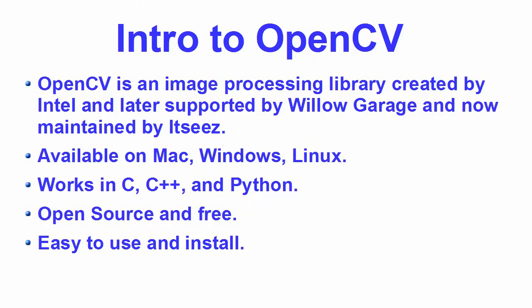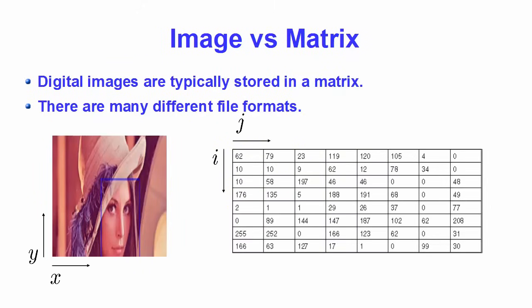Because OpenCV primarily deals with computer vision, that means dealing mainly with images or videos. Digital images are typically stored in the form of a matrix. If you have heard about PPI, or pixels per inch, which refers to display resolution — that means how many individual pixels are displayed in one inch of a digital image — when a computer sees a picture, it sees it in the form of a pixel matrix.